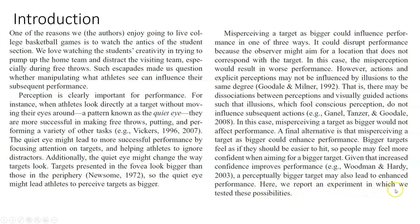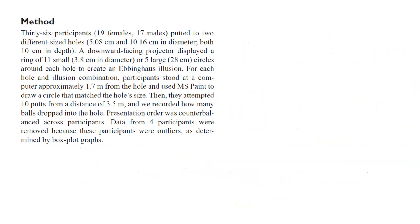'Here we report an experiment in which we tested these possibilities.' The goal is to see if the quiet eye phenomenon — visually perceiving something as bigger — makes performance worse, unchanged, or better. The method: 36 participants putted to two different sized holes — one was 5 centimeters and one was twice as big at 10 centimeters, both 10 centimeters in depth. A downward-facing projector displayed a ring of 11 small or 5 large circles around each hole to create an Ebbinghaus illusion.